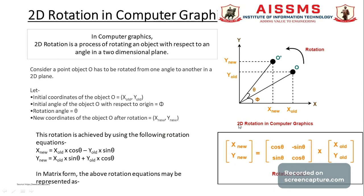This can be achieved using the following rotation equations: X_new = X_old × cos(theta) − Y_old × sin(theta), and Y_new = X_old × sin(theta) + Y_old × cos(theta). In matrix form, the rotation equation is represented as: [X_new, Y_new] = [[cos θ, −sin θ], [sin θ, cos θ]] × [X_old, Y_old], where theta is the rotation angle.